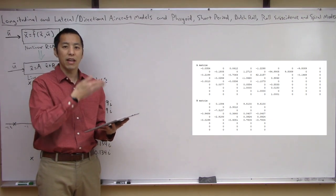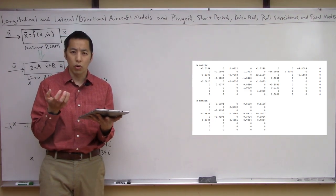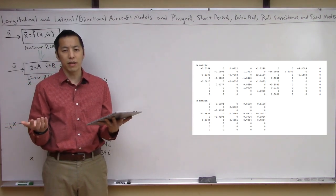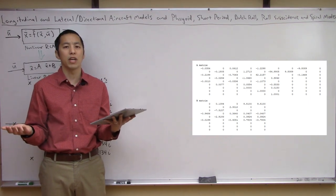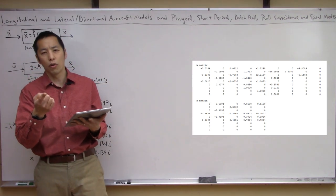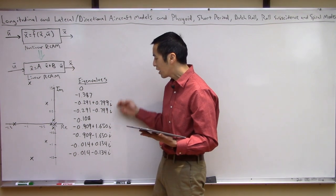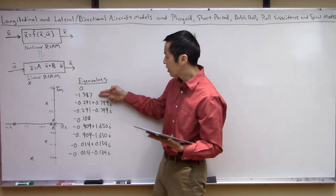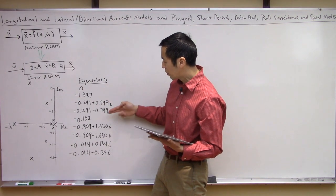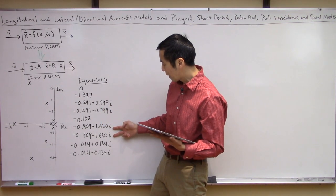This is telling us the behavior of the aircraft near straight and level steady state flight. Naturally the first thing you'd want to do is look at the eigenvalues of this A matrix to get a rough idea of it. I did that in MATLAB — here are the eigenvalues. Since that was a nine-by-nine A matrix, we have nine eigenvalues. There's a pure integrator, a stable pole, an oscillatory stable pole, another stable pole, and two more oscillatory pairs. Everything is mostly in the left half plane with the exception of this one integrator, which we'll talk about later.